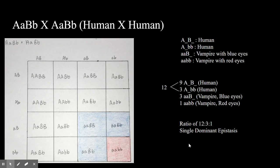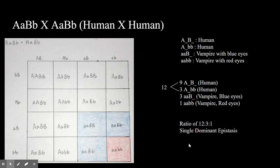When you create a Punnett square by crossing these individuals, a human and a vampire with blue eyes, you will only see two different phenotypes and two genotypes. In this example cross you will be given eight humans and eight vampires with blue eyes represented by the blue shaded regions. This cross results in an epistasis ratio not discussed in our class of one to one.